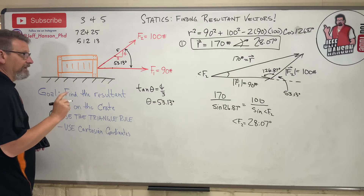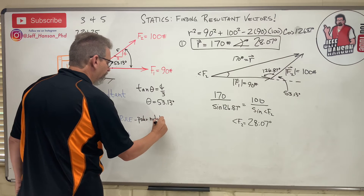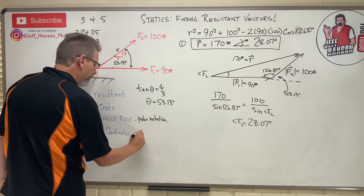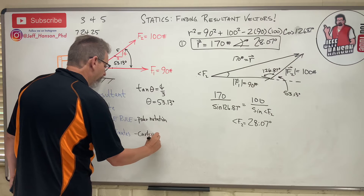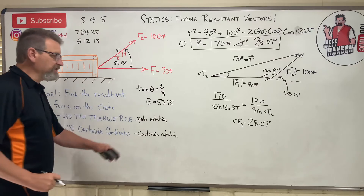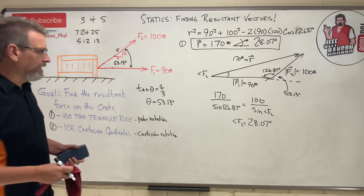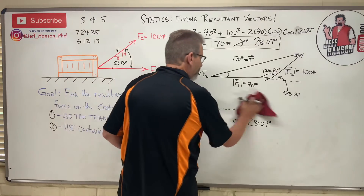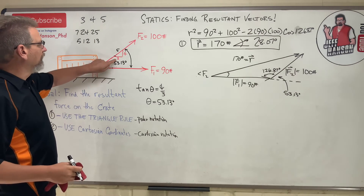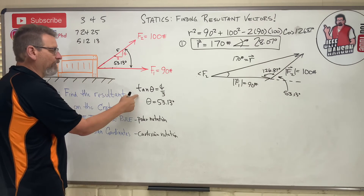So that's answer one from the triangle rule — the resultant in polar notation: 170 pounds at 28.07 degrees. Now for method two, we need it in Cartesian notation — the ijk form. Let me make some room and revisit the slope triangle one more time.